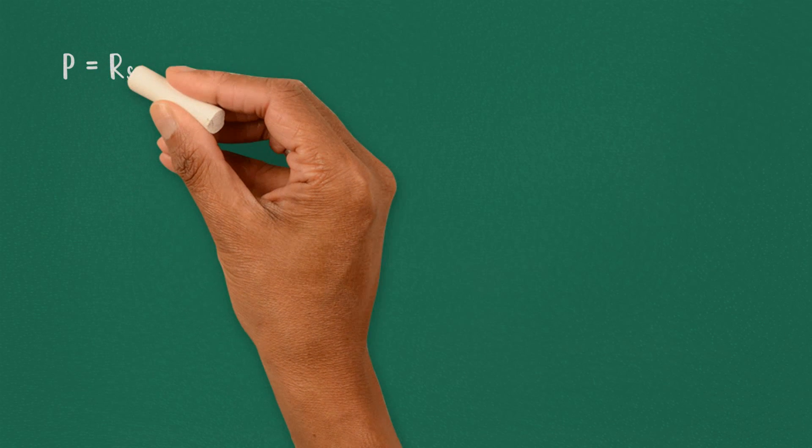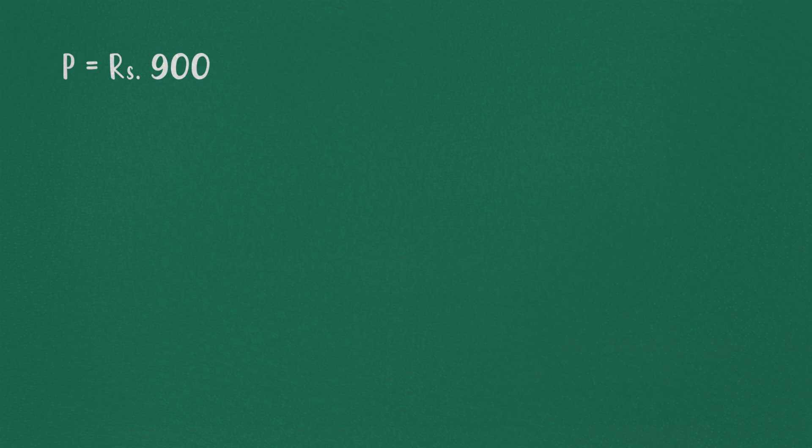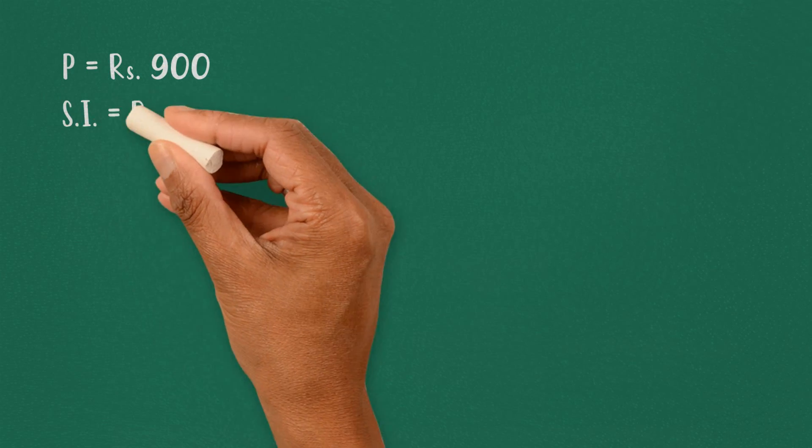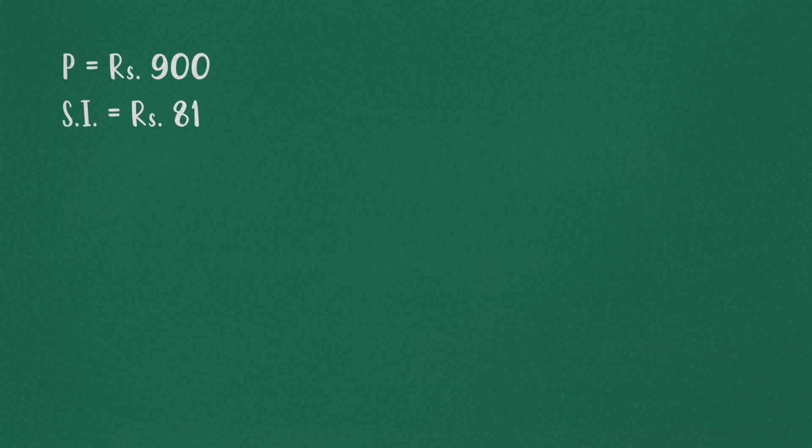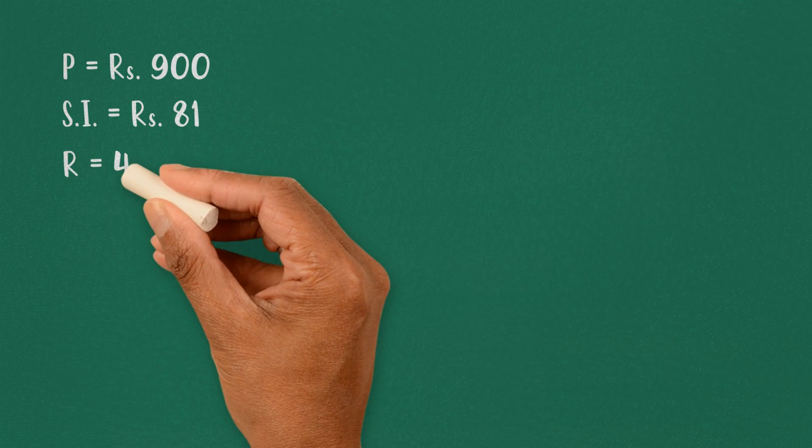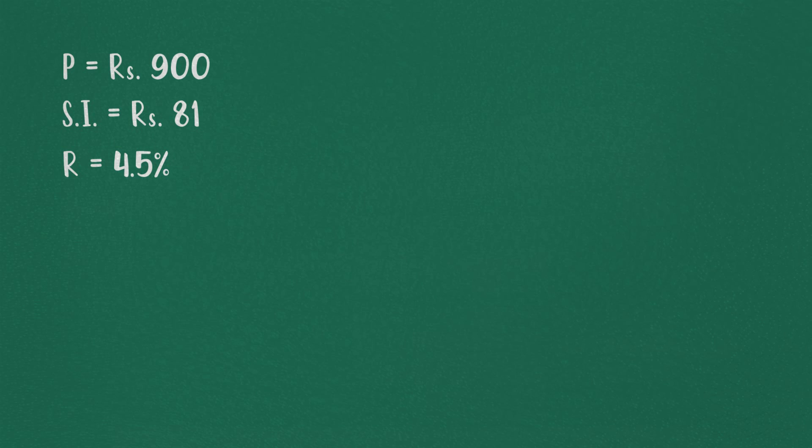From the question we know that principal amount was Rs. 900, simple interest Rs. 81, rate 4.5% and we need to find out the time taken.